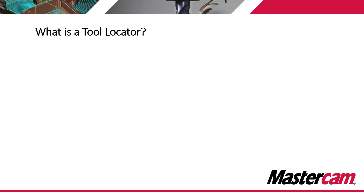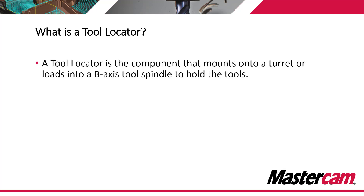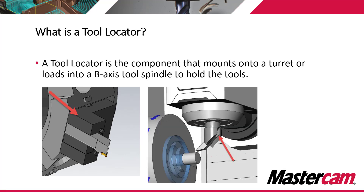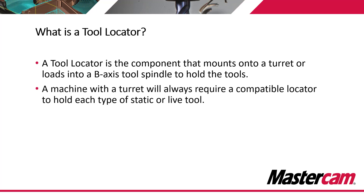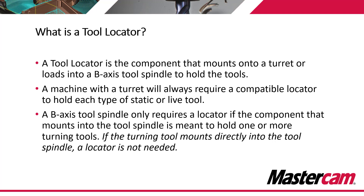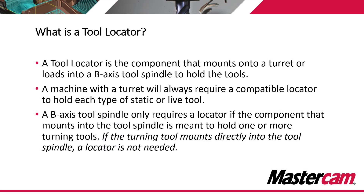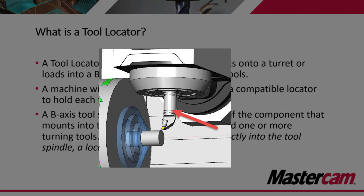What is a tool locator? A tool locator is a component that mounts onto a turret or loads into a B axis tool spindle to hold your tool. A machine with a turret will always require a compatible locator to hold each type of static or live tool. With a B axis tool spindle, it only requires a tool locator if the component that mounts into the tool spindle is meant to hold one or more turning tools. For milling tools, they'll mount directly into the spindle so no locator would be needed. And for a turning tool, if that tool itself mounts directly into the spindle, then we also don't need a locator.